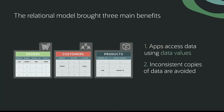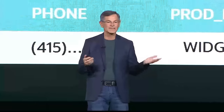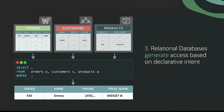There are three main benefits to the relational model. Number one: apps access data using data values — the values in the database — not by hand-coded navigation. The big advantage is that changes to the way data is stored or optimized don't break data, because you're not navigating the actual storage format. Number two: there's no more need for inconsistent copies of data, because data values need to be stored only once — that's called normalization. Number three: relational databases generate access based on declarative intent. Using SQL, you declare the data you intend to access, and the database generates an optimal execution plan. Using SQL, you can also get very powerful joins, which are a way of composing data.